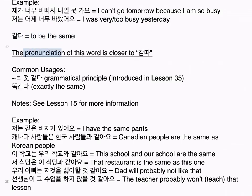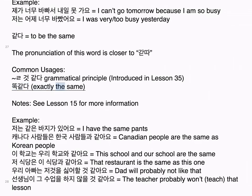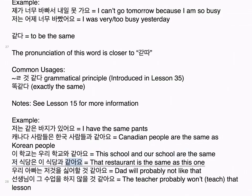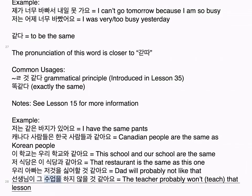같다 means to be the same. The pronunciation is closer to 같다. Common usages: 를 것 같다 is a grammatical principle introduced in lesson 35. 똑같다 means exactly the same. See lesson 15 for more information. Examples: 저는 같은 바지가 있어요. I have the same pants. 이 학교는 우리 학교와 같아요. This school and our school are the same. 저 식당은 이 식당과 같아요. That restaurant is the same as this one. 우리 아빠는 저것을 싫어할 것 같아요. Dad will probably not like that. 선생님이 그 수업을 하지 않을 것 같아요. The teacher probably won't teach that lesson.